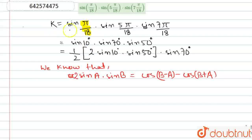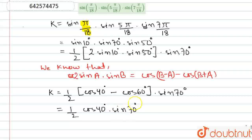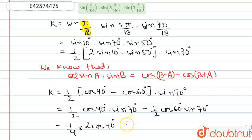Applying this rule to the expression, we will get K equal to half into [cos(40°) − cos(60°)] into sin(70°). Now we multiply sin(70°) with both terms, giving half·cos(40°)·sin(70°) minus half·cos(60°)·sin(70°), which can be written as (1/4) into 2·cos(40°)·sin(70°). Since cos(60°) is one-half, the second term becomes (1/4)·cos(40°)·sin(70°).